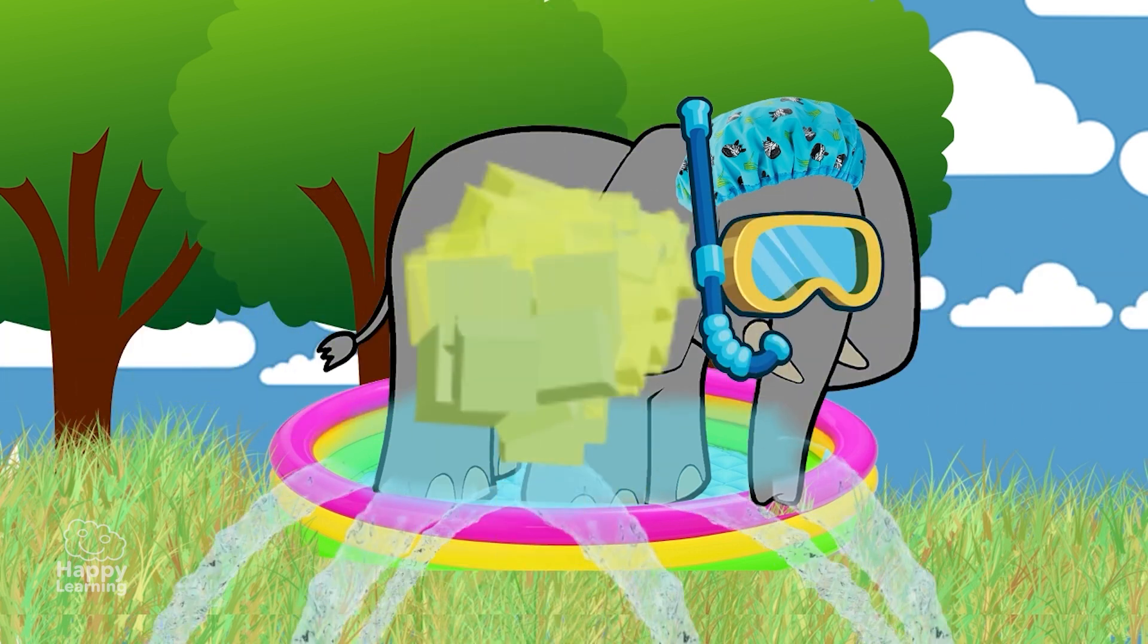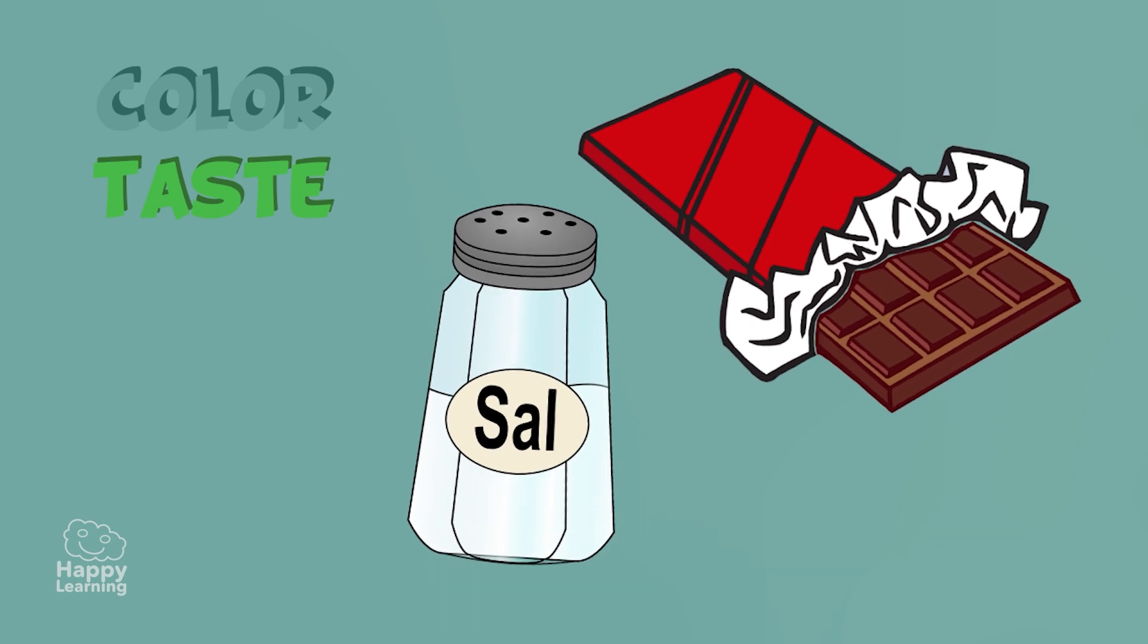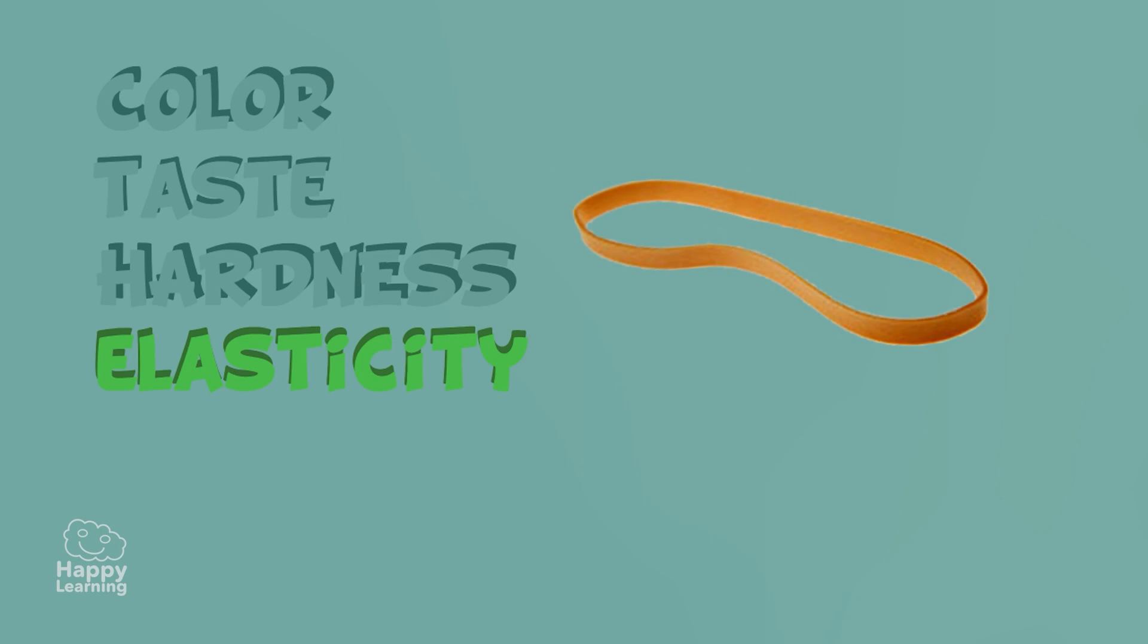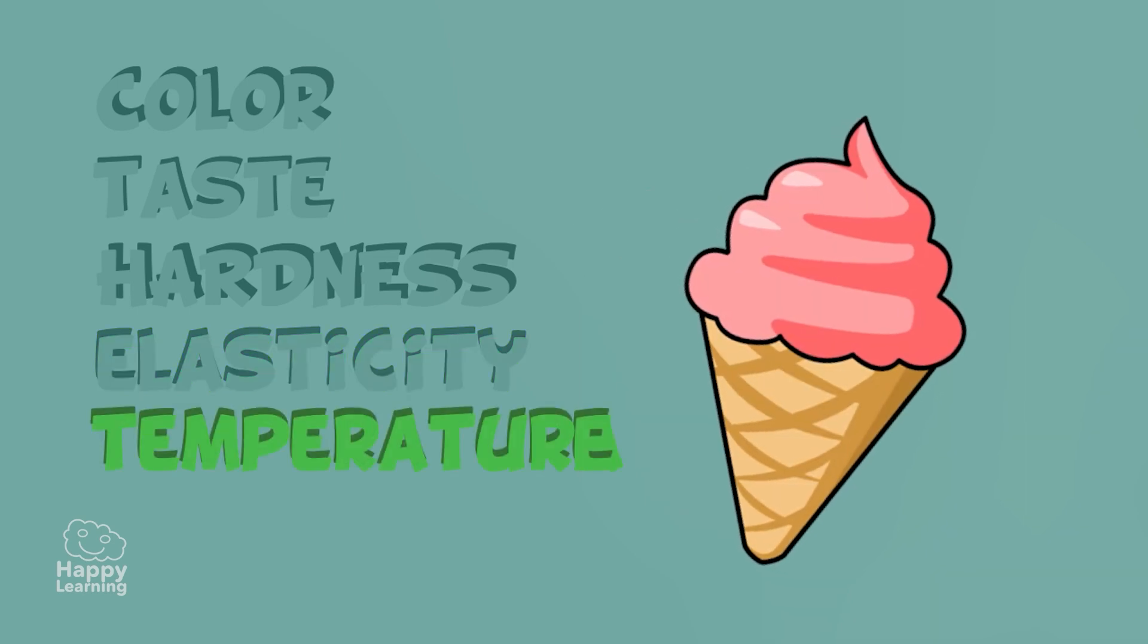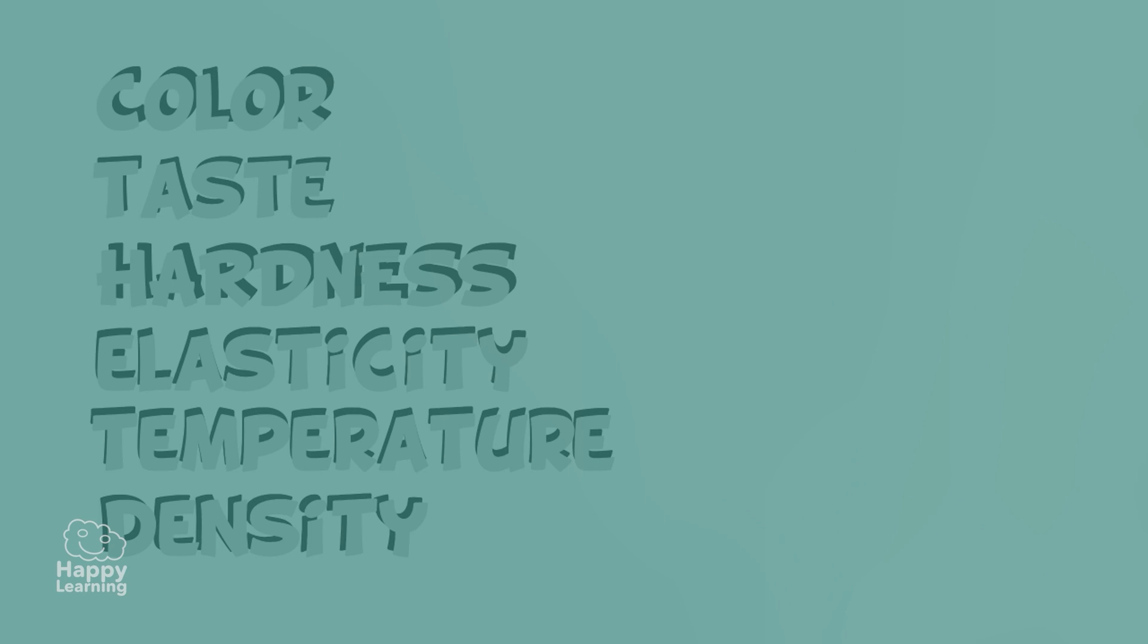Matter has specific characteristics, such as its colour, its taste, its hardness, its elasticity, its temperature, or its density, which allows us to different one substance from the other. This means that each matter has its own properties.